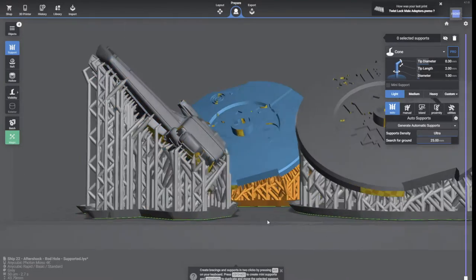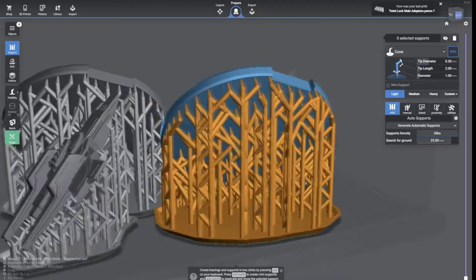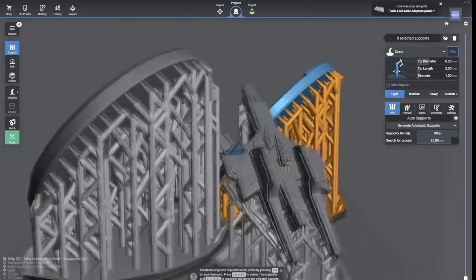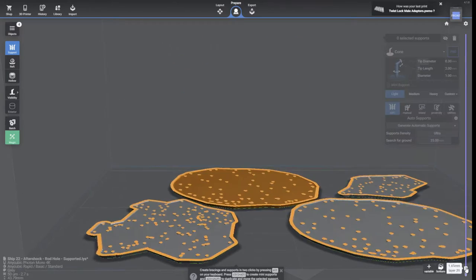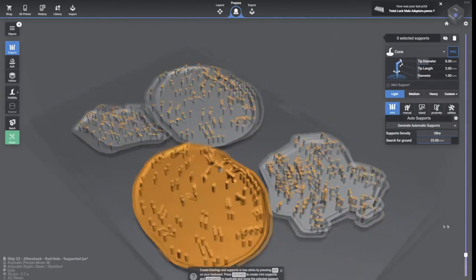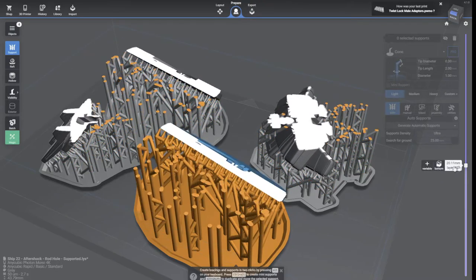It all starts with slicing your files. Well, really, it starts with making sure the printer's in working order and the build plate's level, but that stuff's pretty easy to do. Here I'm using software called Lychee, L-Y-C-H-E-E, and the files you're seeing are from the Bravesun Starship Miniatures campaign that we recently launched on Kickstarter.